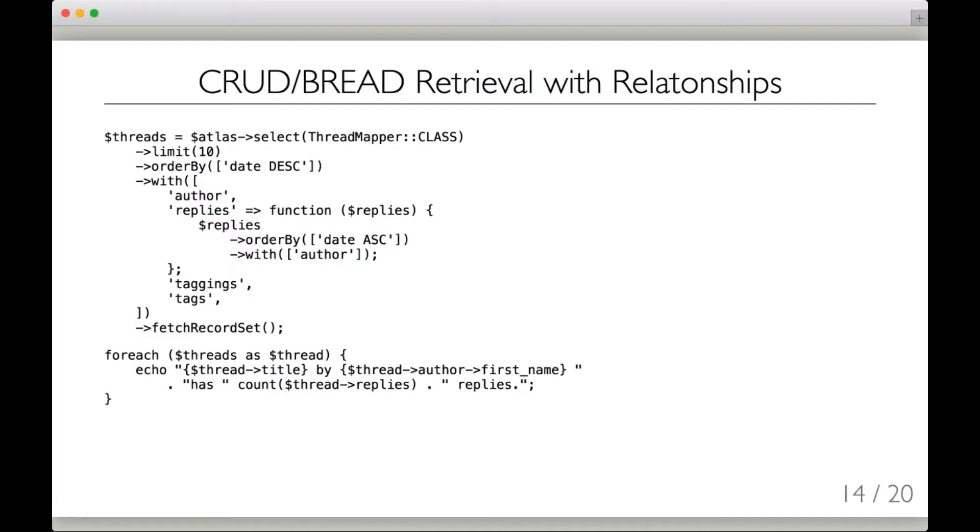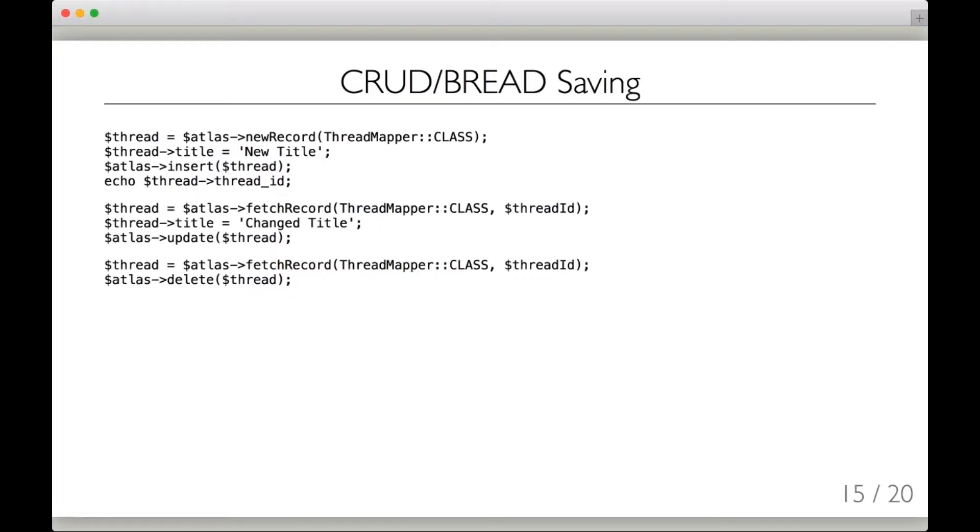Again, this is all very simple stuff, just mapped directly to table columns. Saving records is just as easy in simple CRUD or BREAD operations. We can say either give me a new record or fetch an existing record, change the title on it, and then either insert it or update it. In the case of inserts, Atlas knows enough that if there is an auto-incremented column, it will actually update that column for you. It will bring back that column for you into the record. And again, remember, these record objects are not connected to the database at all, so you can pass these records around throughout the system and not have to worry about making database connections through them. You have to operate on them through the mapper.